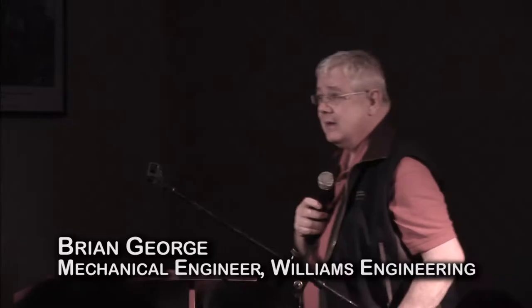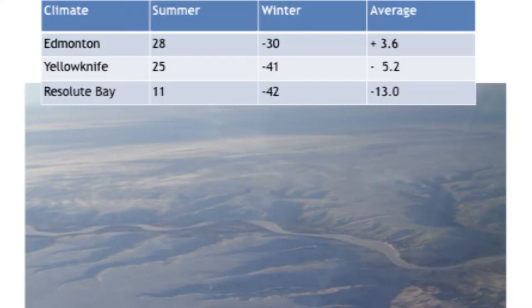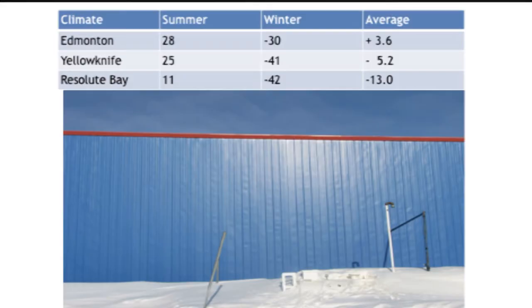It's really the climate that starts off why we design things differently. A summer climate in Edmonton and Yellowknife is almost the same, but in Resolute it's quite cool. In winter, Edmonton is in the same range as Yellowknife and Resolute is very close to Yellowknife. But the average temperatures in Edmonton are well above zero, while the average temperatures in Yellowknife are below zero, and in Resolute they're way below zero. That creates a lot of problems with permafrost, and snow drifting in Resolute is just crazy.